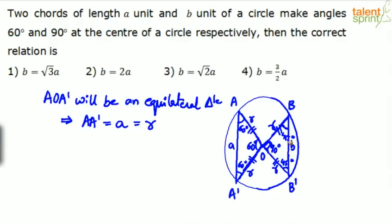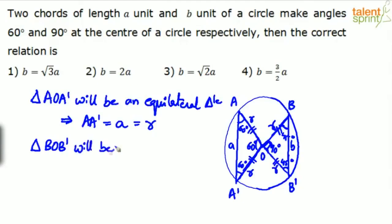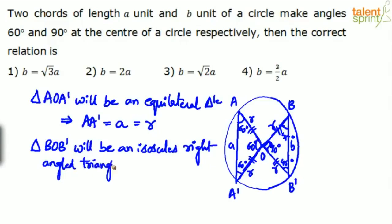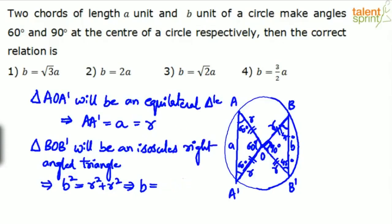Triangle BOB' is an isosceles right angle triangle, so b (the chord BB') is the hypotenuse. Applying the Pythagorean theorem: b² = r² + r² = 2r², therefore b = √2·r.